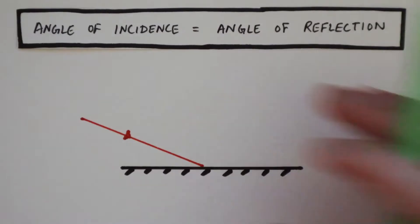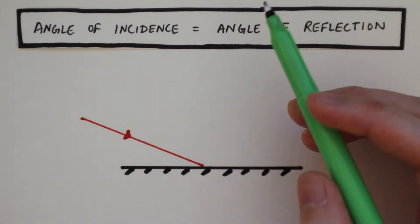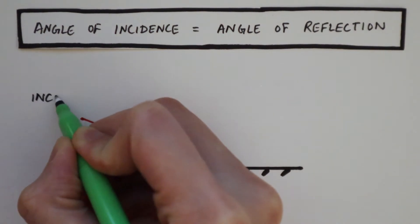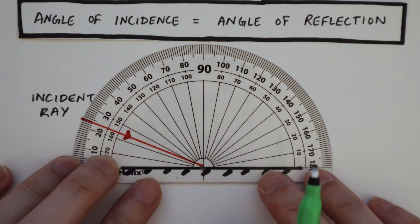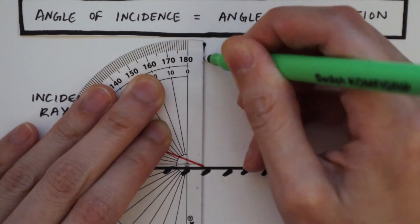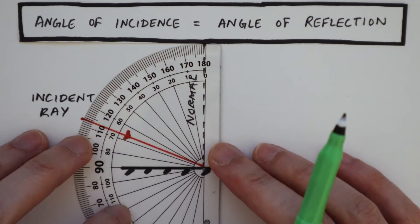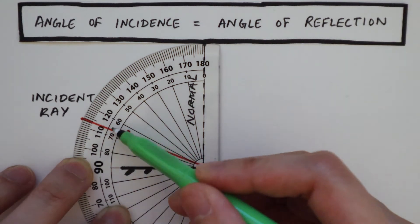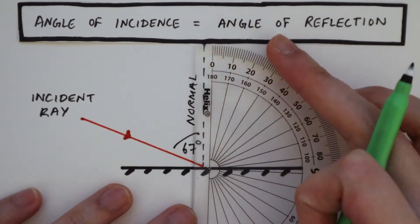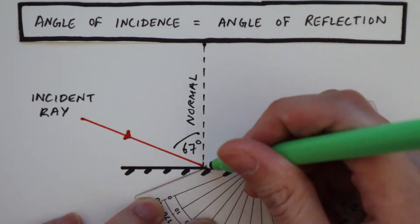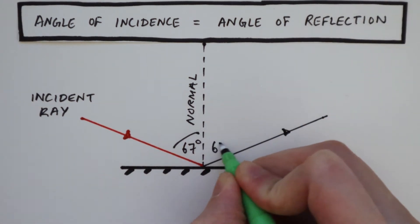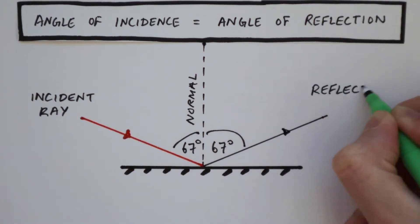You might be asked to complete a reflection diagram in your GCSE exam. I will always start by labeling the incident ray and then marking out the normal. Measure the angle of incidence and then reflect it at the same angle so that you can draw your reflected ray. And that's a ray diagram to show reflection.